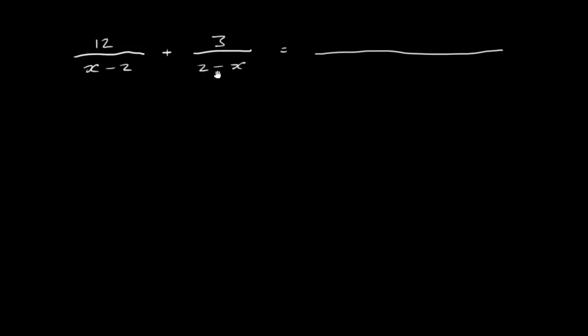So they're almost the same. If we could turn this 2 minus x into an x minus 2, that would save us. Normally we would write x minus 2 times 2 minus x as the common denominator, and that would work. But an easier way is to just convert this one here into an x minus 2.